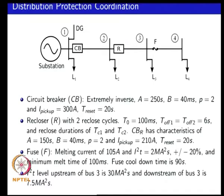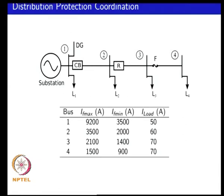We plotted the trip time versus current characteristics of such devices, including the nominal fault current ranges and load current ranges. We looked at the properties of individual devices and the time over-current coordination between upstream and downstream devices. We also checked whether we have backup protection in case one protective device fails, and whether there are adequate time margins in the protection settings.